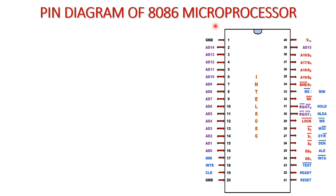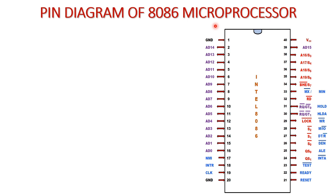Now we will discuss the pin diagram of the 8086 microprocessor. You can see the basic pin diagram here towards your right-hand side. It is starting from ground and ending at VCC. Pin number 1 is ground and pin number 40 is VCC.